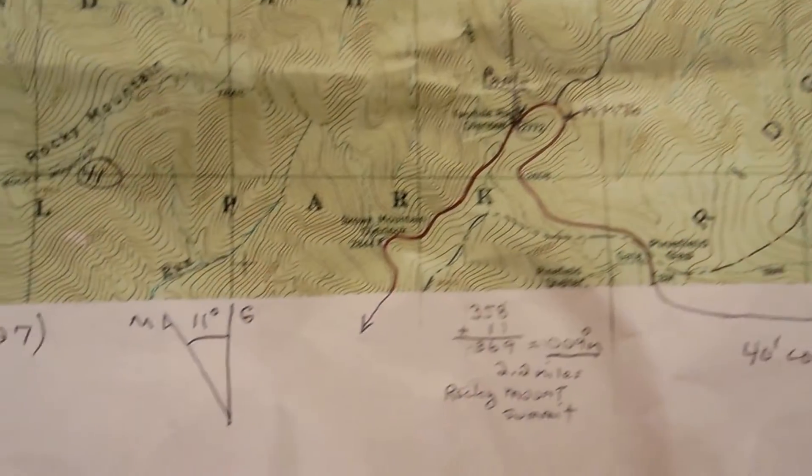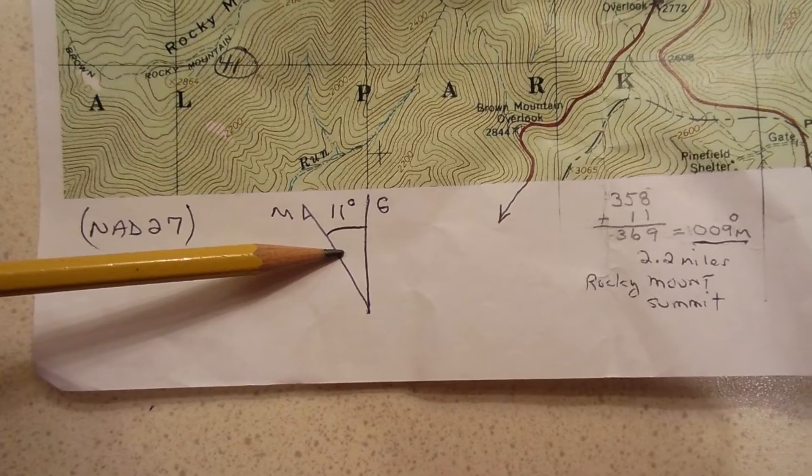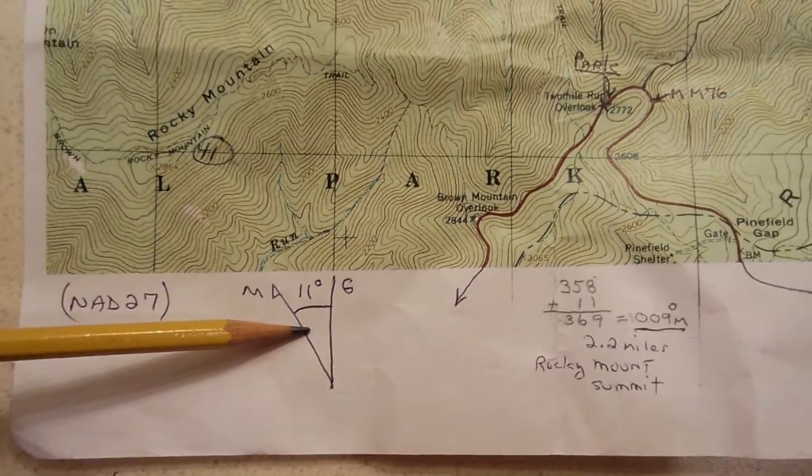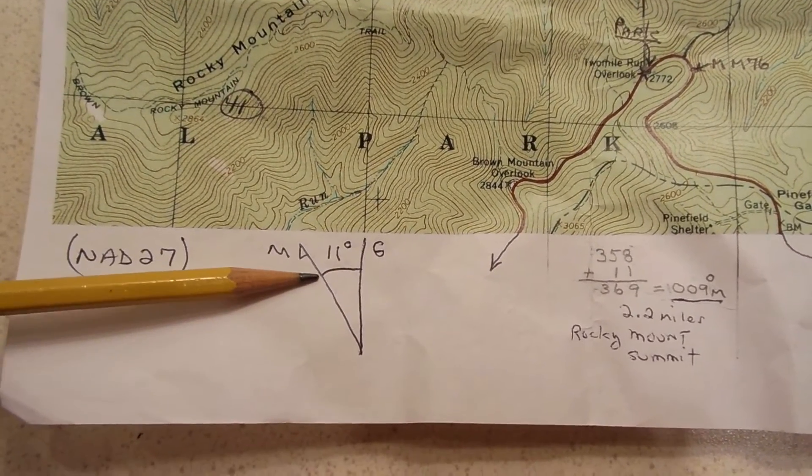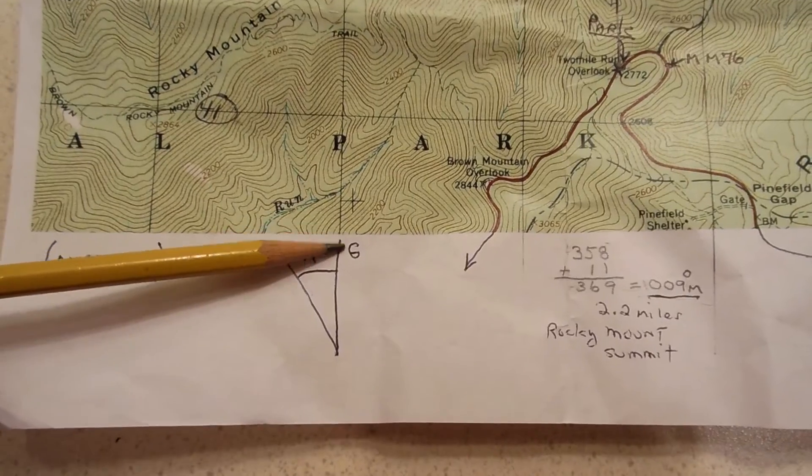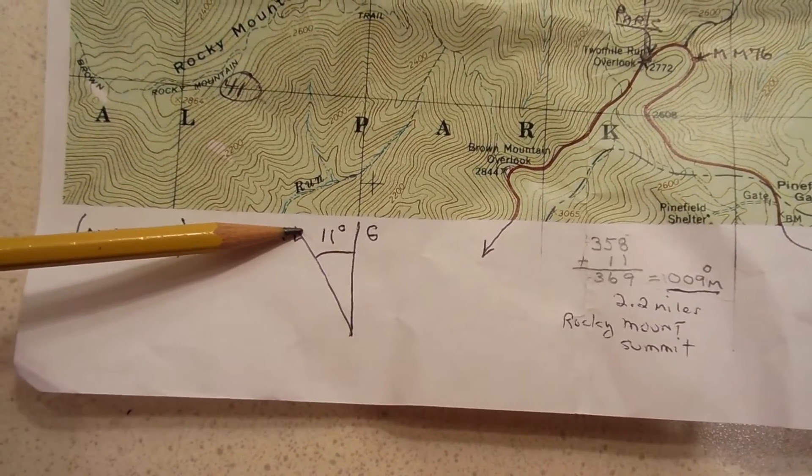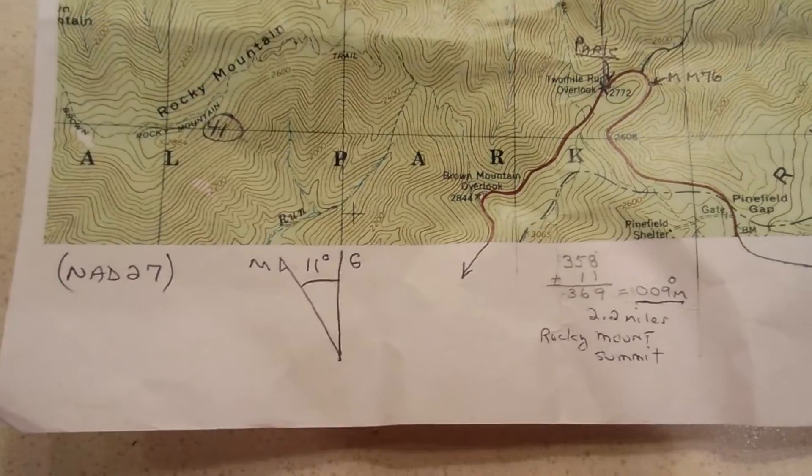So that's why in my videos, you'll see that I always draw this figure because I'm never printing the entire map. I'm just printing a piece of the map that I'm going to be using. So that's why I drew this. This is my grid north, and this is my magnetic north pointing to the west, and there's 11 degrees between them.